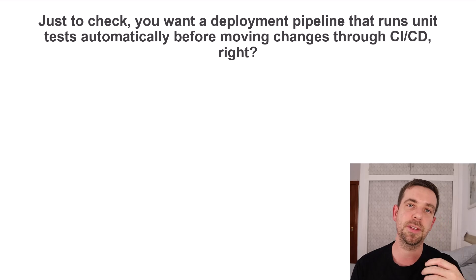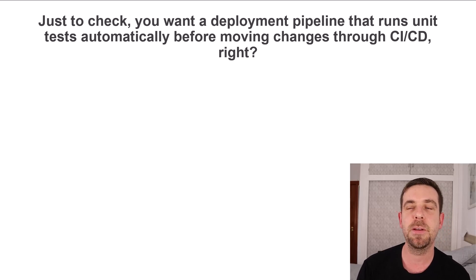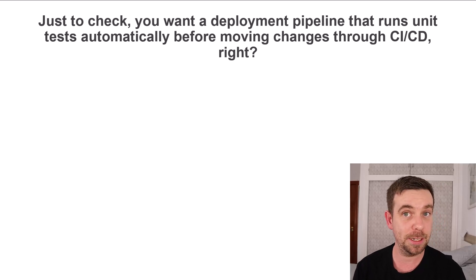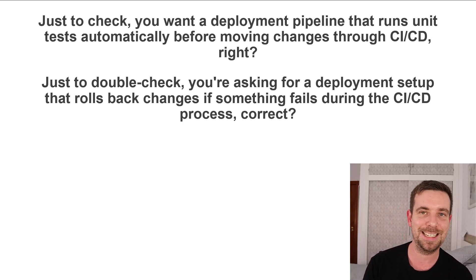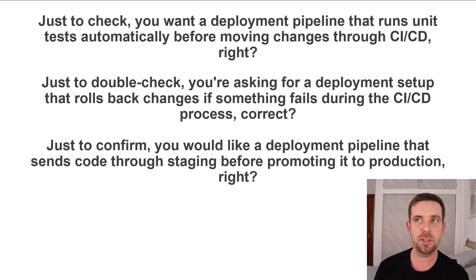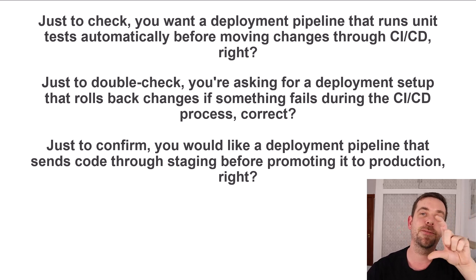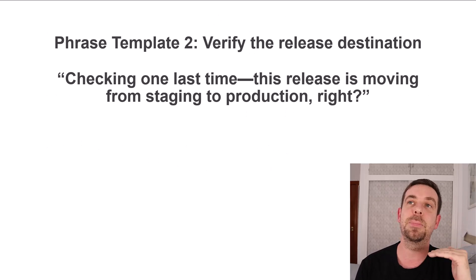Some examples using this phrase template: Just to check, you want a deployment pipeline that runs unit tests automatically before moving changes through CICD, right? Just to double check, you're asking for a deployment setup that rolls back changes if something fails during the CICD process, correct? Just to confirm, you would like a deployment pipeline that sends code through staging before promoting it to production, right? Now it's your turn — write a phrase using this template in the comments.